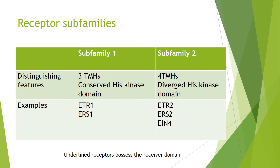Interestingly, where the histidine kinase region has diverged, it often diverges in different manners. We can split the receptors into two subfamilies: subfamily one containing ETR1 and ERS1, and subfamily two containing ETR2, ERS2, and EIN4. Triple response assays show there's actually a lot of functional overlap between these two subfamilies, and in Arabidopsis, subfamily one appears more important in playing a role in well-characterized ethylene responses like the triple response.